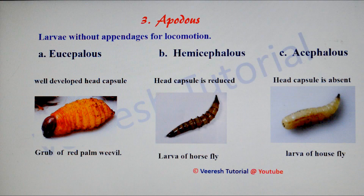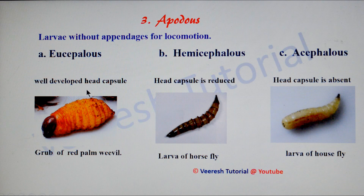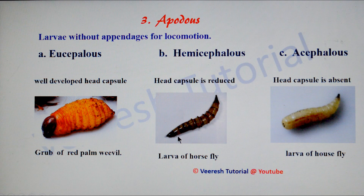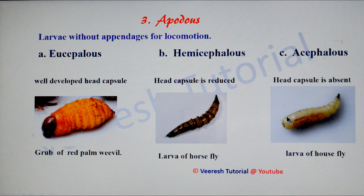The third type is apodous larvae — larvae without appendages for locomotion. Based on the degree of sclerotization of the head capsule, there are three types: eucephalous larvae have a well-developed head capsule, seen in grubs of red palm weevil and larvae of mosquito; hemicephalous larvae have a reduced, not well-sclerotized head capsule, seen in horse fly and robber fly larvae; and acephalous larvae have no head capsule at all, seen in maggots of house flies — also called vermiform larvae.